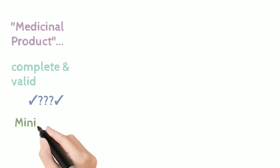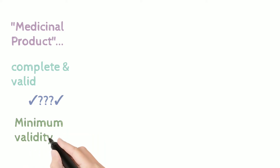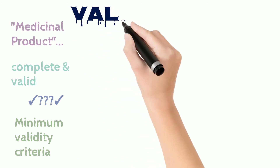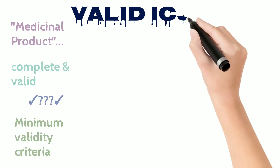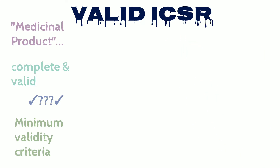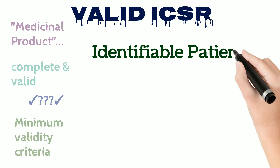According to the ICSR guideline E2D, it is recommended that as much information as possible be collected at the time of the initial report. However, for the purpose of regulated reporting, the minimum data elements required are: first, identifiable patient, which includes age, gender, date of birth, and so on.